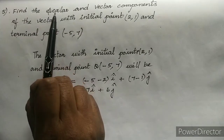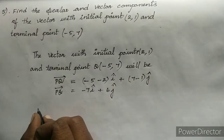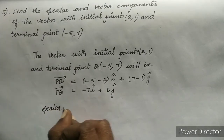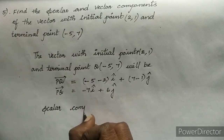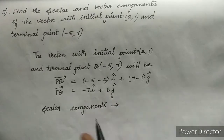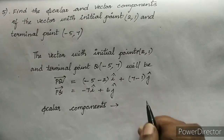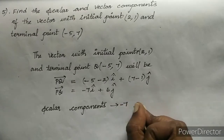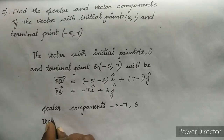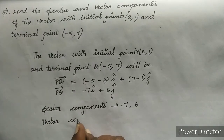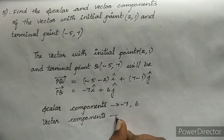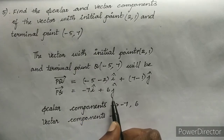We are asked to find scalar and vector components. So the scalar components are −7 and 6. And our vector components are −7 I cap and 6 J cap.